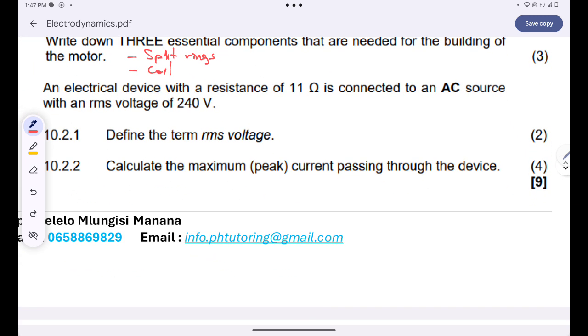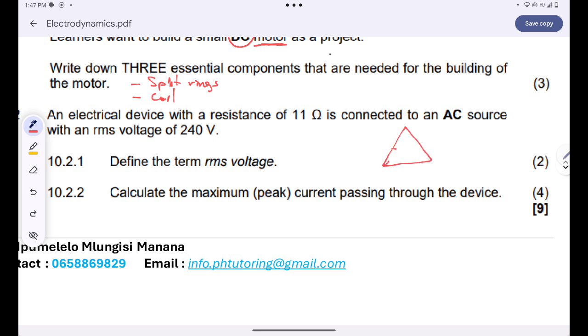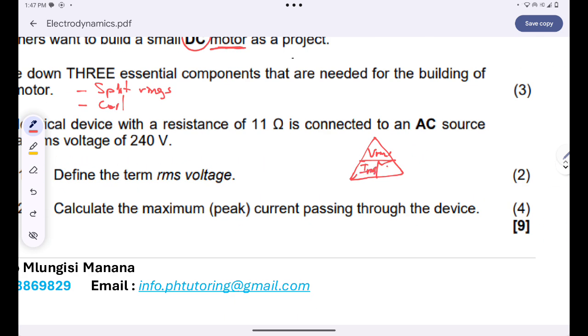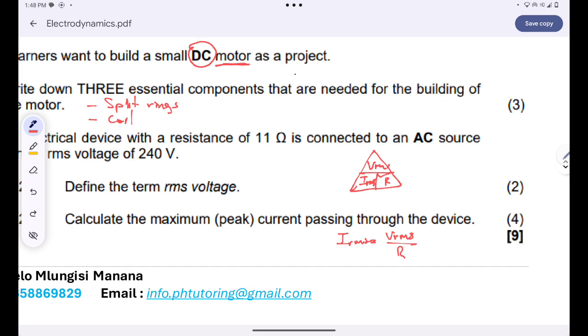And then now they want us to calculate the maximum current. Remember that guys, we can still apply Ohm's law over here. V RMS is equal to I RMS multiplied by the resistance. So, I RMS will be equal to V RMS all over the resistance. But remember that there is an equation at the back of your question paper. It says I RMS is basically equal to the peak current or the maximum current divided by the square root of two.